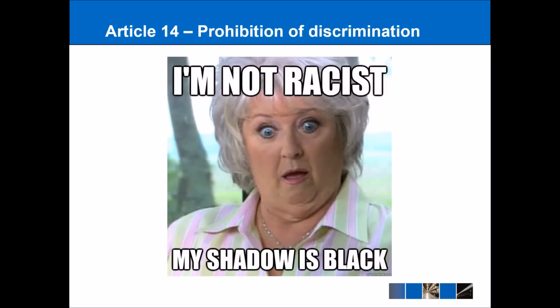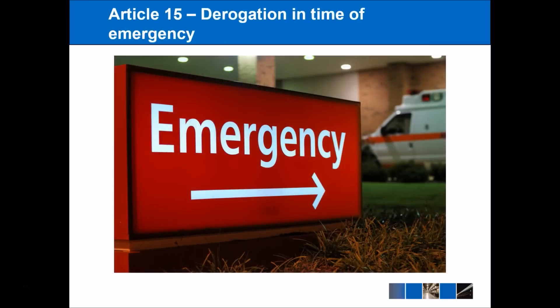Article 14 is the prohibition of discrimination, covering race, country of origin, social background, and a number of other things. Article 14 is often brought alongside other article cases where groups feel they've been discriminated against. In times of emergency, states are allowed to derogate from certain rights — for example, the right to a fair trial might be limited. However, remember that absolute rights remain. Despite whatever emergency is occurring, there would never be any allowance for torture, because the prohibition of torture is always absolute.